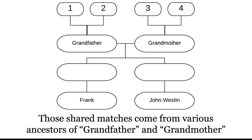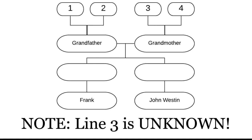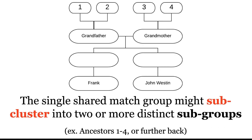When I look at the shared match list between Frank and John Weston at AncestryDNA, they share about 150 matches. Our hypothesis is that these matches come from either their shared grandfather or their shared grandmother. Simply clustering all shared matches into one group puts everyone together — lines one, two, three, four, and beyond. What we want to do is break these clusters into smaller sub-clusters, focusing on discrete groups, especially for an unknown line like line three.